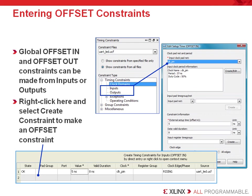Global offset in and offset out constraints are likewise entered from the same area of the Constraint Type window. Once the customization window opens, you can specify the length of time to constrain all of your input or output paths. Remember that these constraints will optimize all the input paths or output paths to the selected clock domain. Most designs also require pin-specific offset in and offset out constraints, which cover only the paths to or from specific I/O pins. These can also be entered with the Xilinx Constraints Editor, and are covered in more detail in the Timing Groups and Offset Constraints module in the Designing for Performance course.